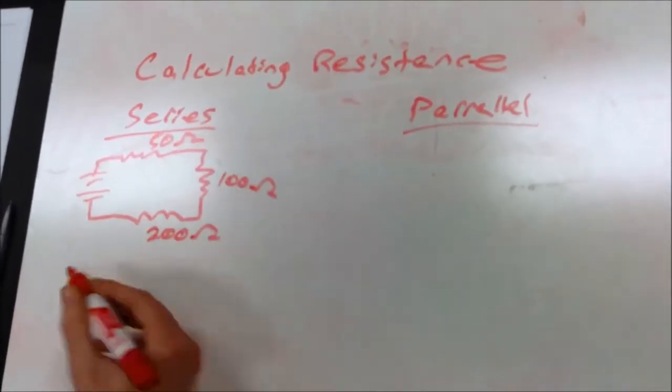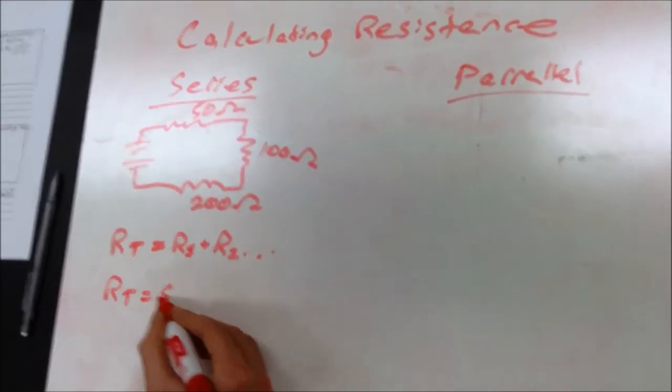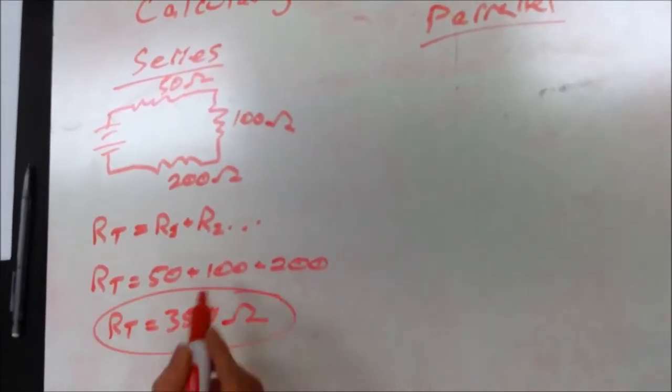While Ohm's Law can be used to find total resistance if voltage and current are already known, there is another way that this can be done. In a series circuit, it is as simple as adding each resistor together.